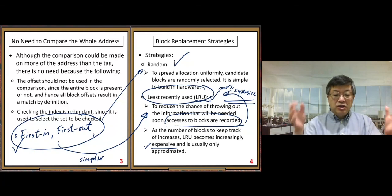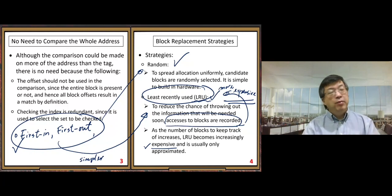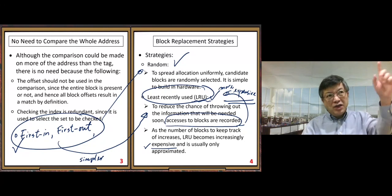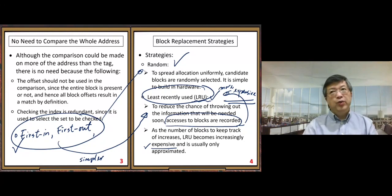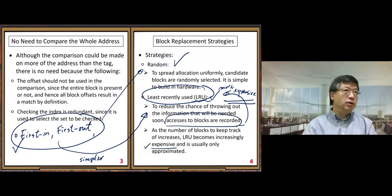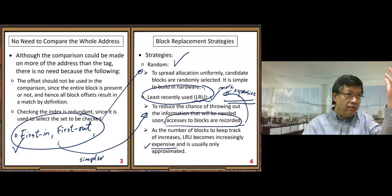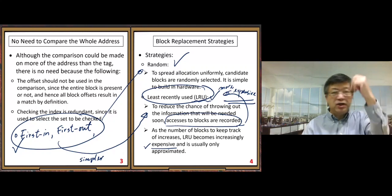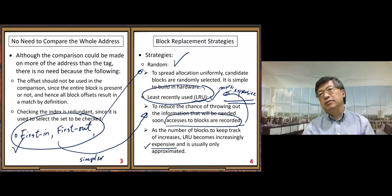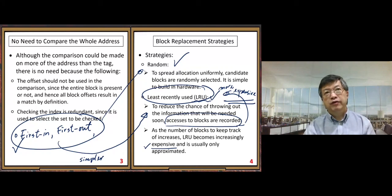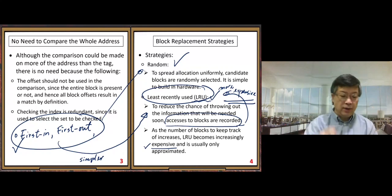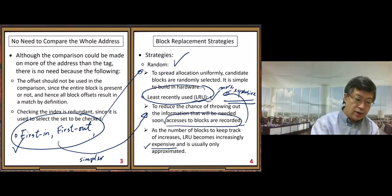That covers B.3. The last topic, B.4, is a very important topic: average memory access time. That's a big and important topic for this part B.